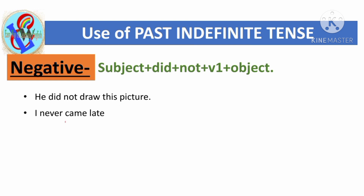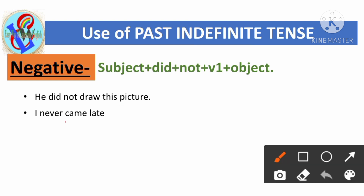'I never came late.' Here 'I' is the subject, and with the word 'never', the second form of the main verb is used — 'came' — because with 'never' we do not use 'did not'.